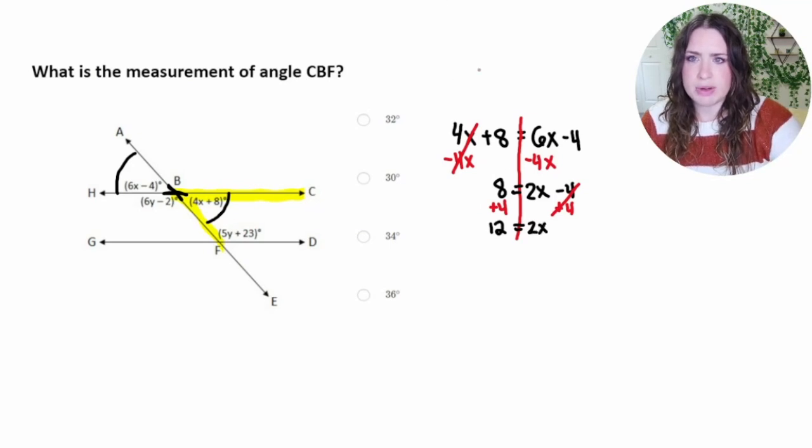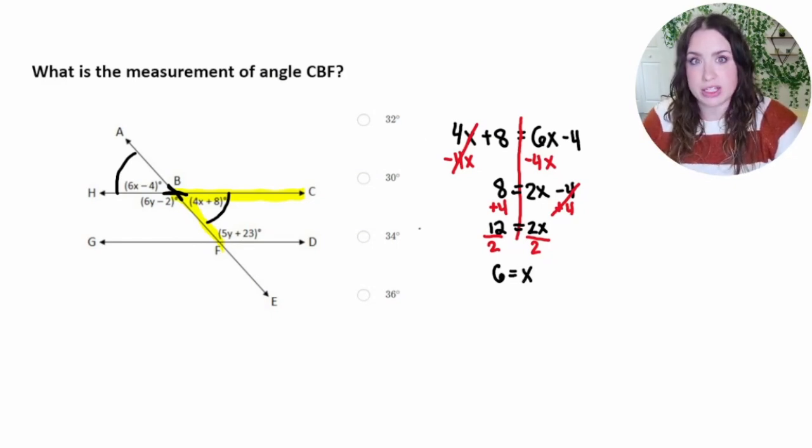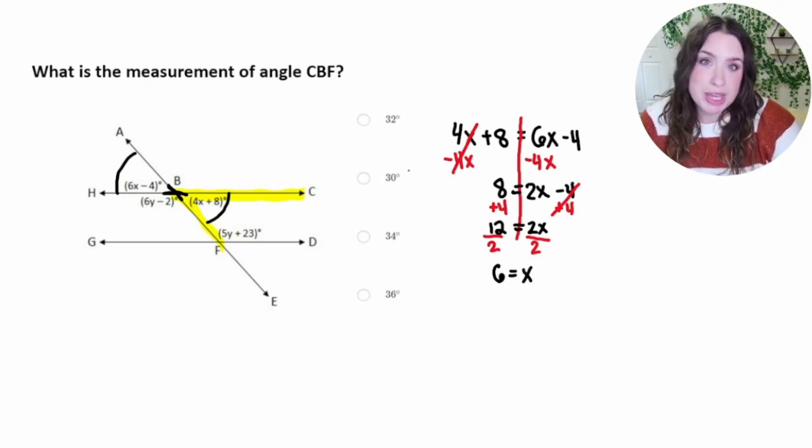Final step to get rid of that 2, which is multiplying x. I'm going to divide both sides of the equation by 2 to get 6 is equal to x. Now, this problem doesn't give 6 as a possible answer, but I do want to point out that sometimes they want you to get distracted partway through the problem and think, oh, I got my answer. So be careful of that.